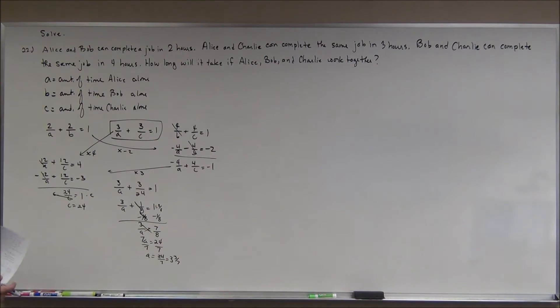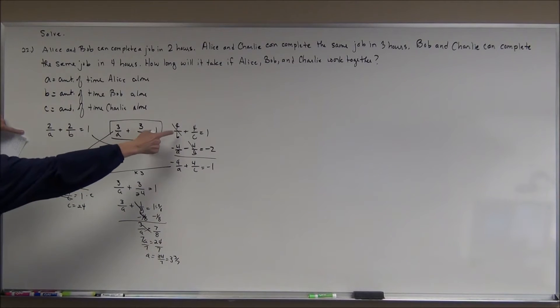24 sevenths which is 3 and 3 sevenths. So, that's the time in hours that they can get this job working alone. Then I got to figure out what B is. So, I'm going to use this one this time.